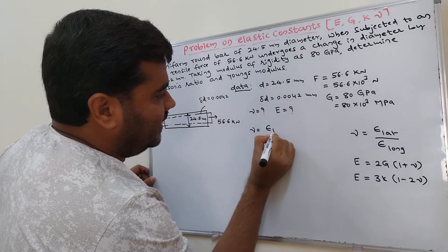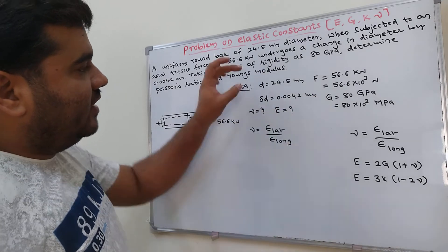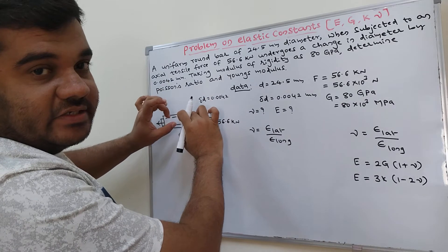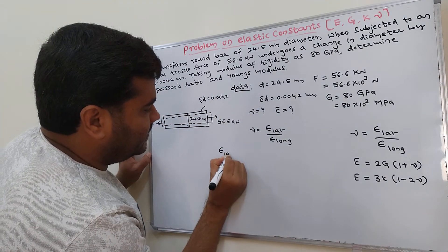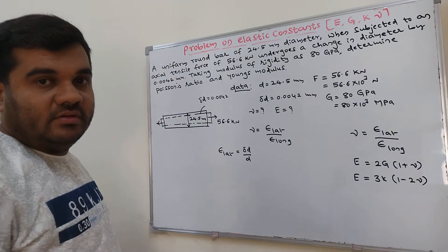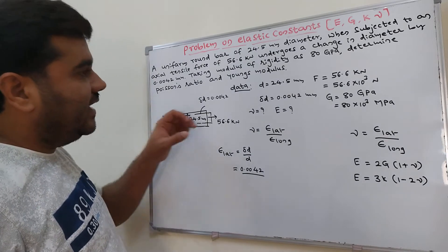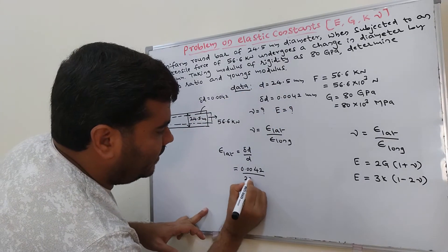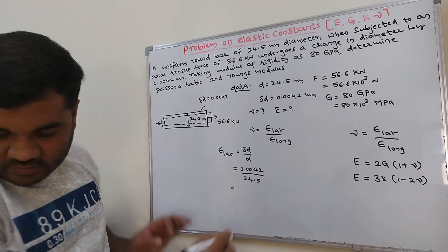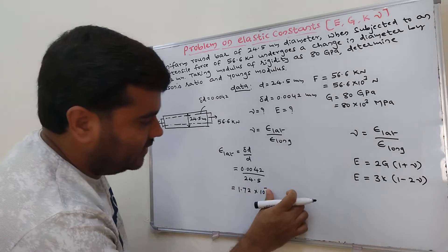Nu equals lateral strain divided by longitudinal strain. Since original diameter and change in diameter are given, we can calculate lateral strain. Lateral strain equals change in diameter divided by original diameter, which is 0.0042 divided by 24.5, giving us 1.72 into 10 raise to minus 4.